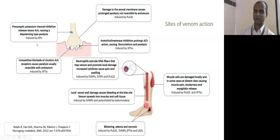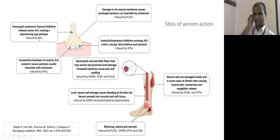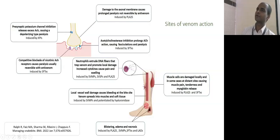At the neuromuscular end plate, the presynaptic neuron is the first site of action. One specific non-enzymatic protein called Kunitz-type serine protease inhibitor (KPI) causes inhibition of presynaptic potassium channels, leading to excessive release of acetylcholine, which causes a depolarizing type of paralysis. A second mechanism is caused by phospholipases induced by beta-bungarotoxin, which damages the axonal membrane directly and damages synaptic vesicles containing acetylcholine.